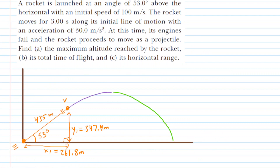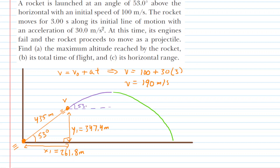We'll go back to the diagram and make those labels. We also want to figure out the final speed shown in orange. We know that final speed equals initial velocity plus acceleration times time. The initial was 100 meters per second, plus the acceleration multiplied by the time of 3 seconds, giving a final speed of 190 meters per second. We'll label that, and also label this angle as 53 degrees.